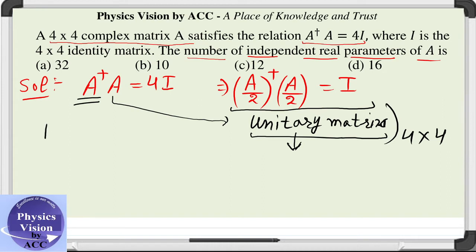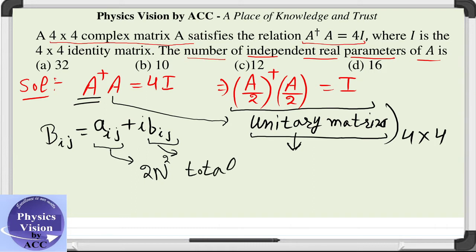How will we do it? Let us consider a unitary matrix B whose matrix elements can be written as A_ij plus iota B_ij. In this we can see that n square elements can be chosen in A and n square elements can be chosen for B. Hence, 2n square total parameters are there in a unitary matrix.